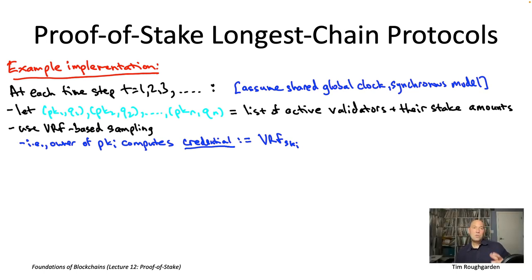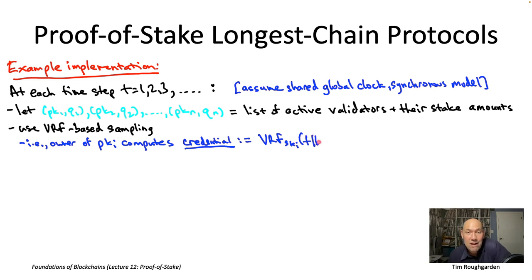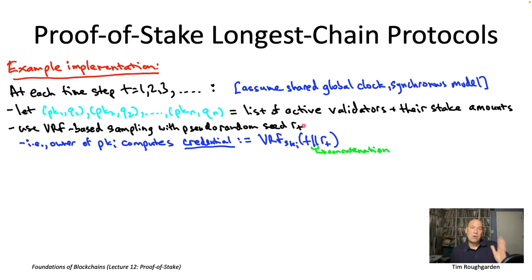Just like if different people sign the same document using different private keys they generate different signatures, so too will different people evaluating the same VRF on the same input get different outputs because they use different private keys. In this protocol, everybody evaluates their VRF on exactly the same input: the concatenation of the current time step T with a pseudorandom seed R sub T that corresponds to that time step. There is still an underspecified component — what exactly is that pseudorandom seed R sub T associated with time step T?